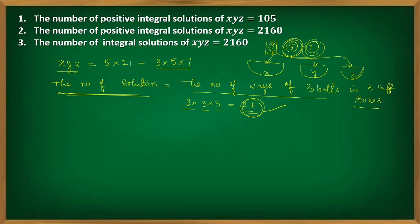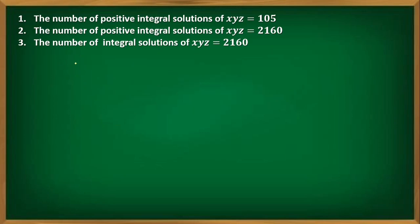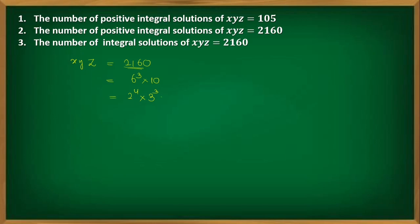Now let's see how to solve this when the primes don't all have power 1. In the second problem, x·y·z = 2160. Writing 2160 in canonical form: 2160 = 2⁴ × 3³ × 5. The first prime has power 4, the second has power 3, and the third has power 1.